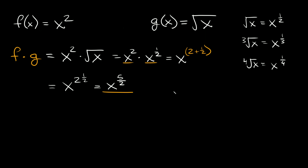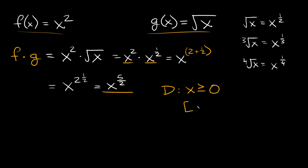Now let's figure out what the domain is. Looking at the two original functions: f of x has no restrictions since x can be any positive or negative number. But for g of x, we can't have any negative numbers because of the square root. Since g of x has restrictions and f of x doesn't, g of x rules the domain overall. So the domain for the product is x is greater than or equal to zero, or [0, ∞).